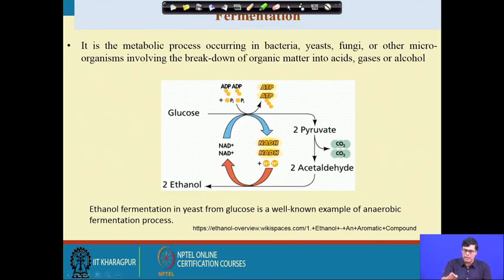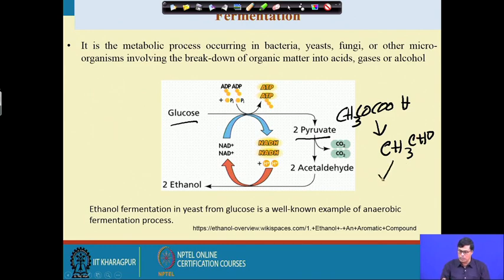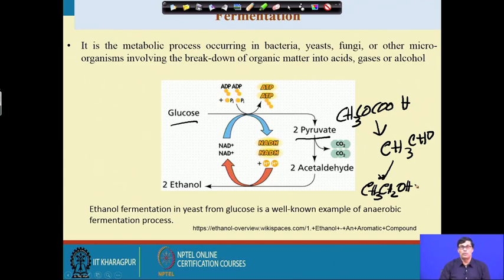Now, regarding how fermentation is carried out: in the Embden–Meyerhof pathway, one mole of glucose produces two moles of pyruvic acid. The formula of pyruvic acid is CH3COCOOH. When it undergoes decarboxylation, it forms acetaldehyde (CH3CHO), which is then reduced to ethanol. Most countries are now producing ethanol through biological processes to replace gasoline, since gasoline is produced from fossil fuels with limited reserves.